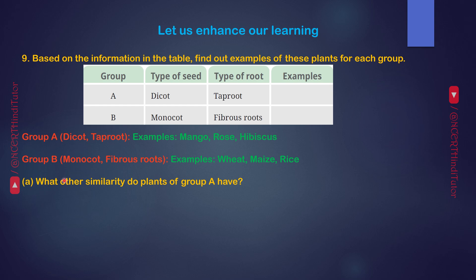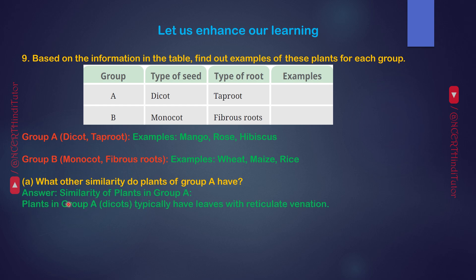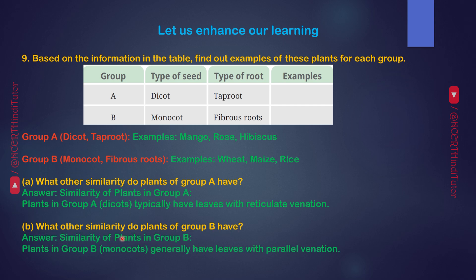A. What other similarity do plants of Group A have? Answer: Plants in Group A, dicots, typically have leaves with reticulate venation. B. What other similarity do plants of Group B have? Answer: Plants in Group B, monocots, generally have leaves with parallel venation.